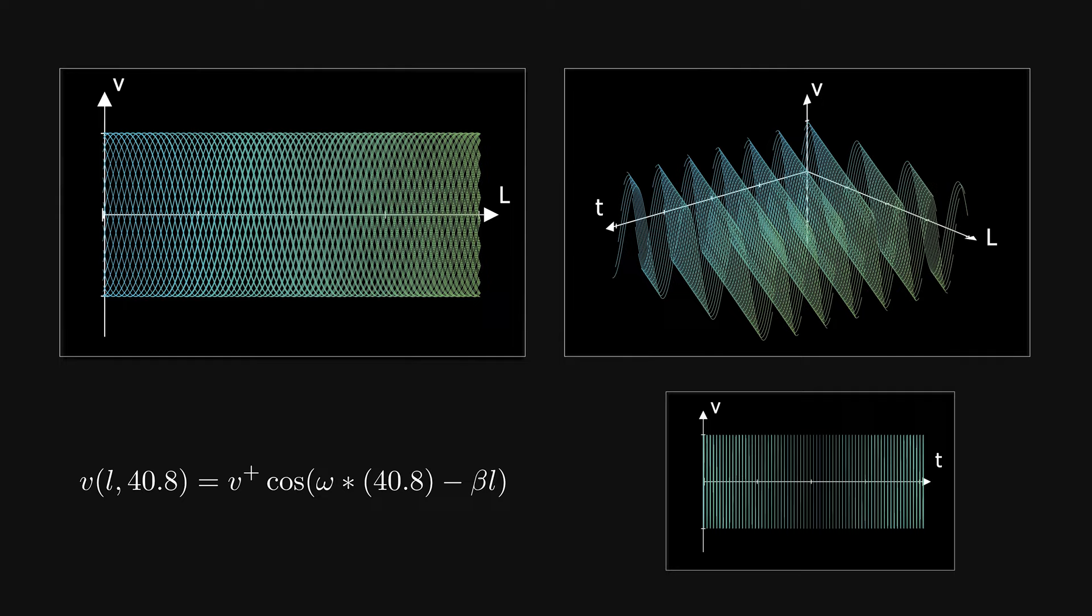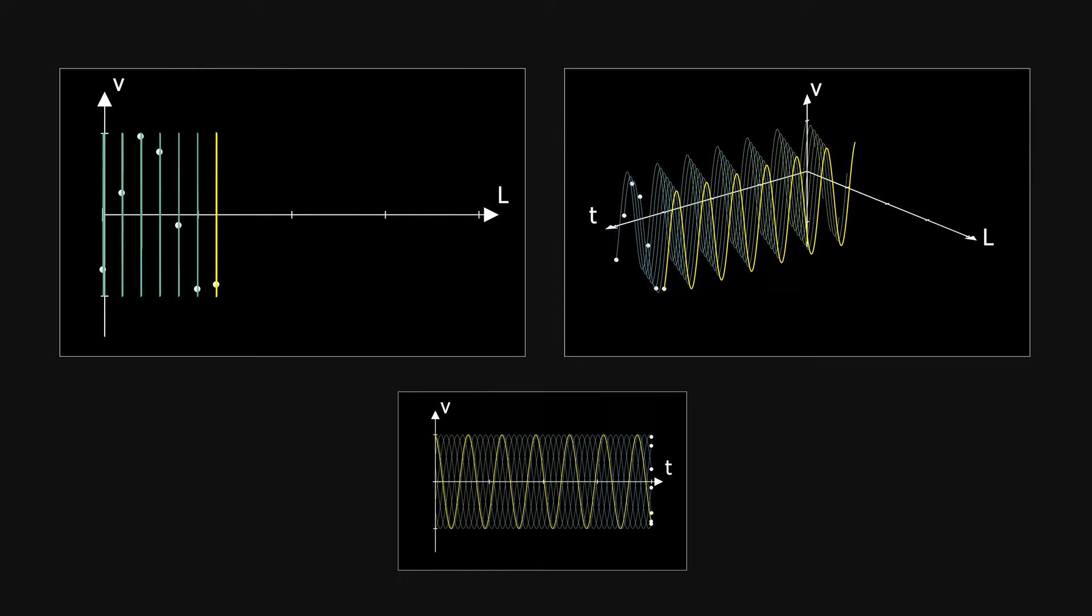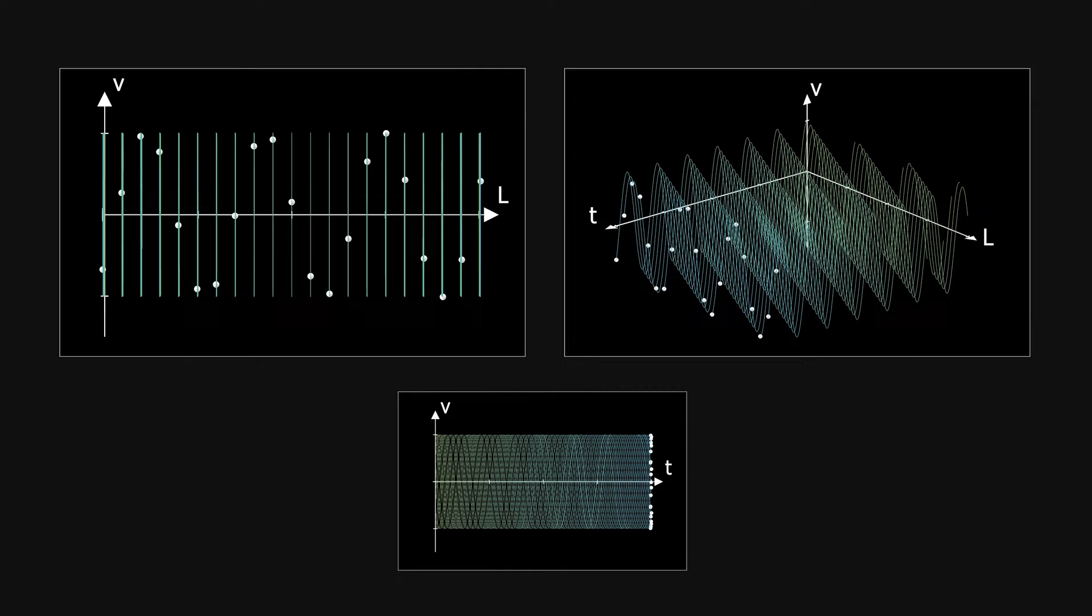Voltage and current at each point in a line vary sinusoidally with respect to time. You can notice that by seeing the movement of the dot up and down, where the height of each dot represents the voltage at that point in the line. Don't forget that the forward travelling current wave is just the voltage wave scaled by a real number, the characteristic impedance. So it varies along the line the same way as the voltage.